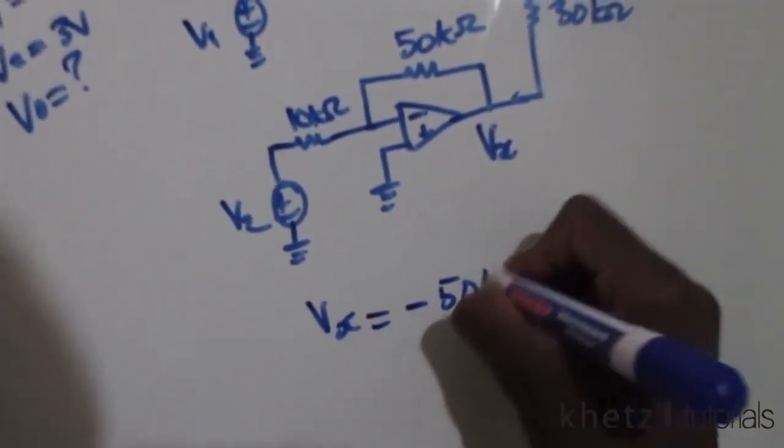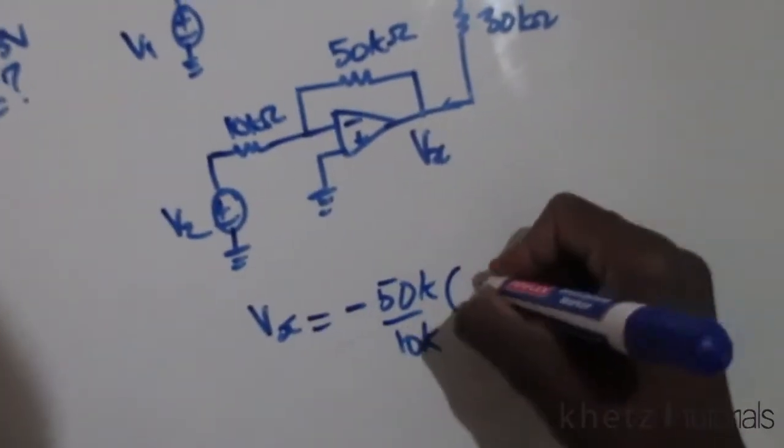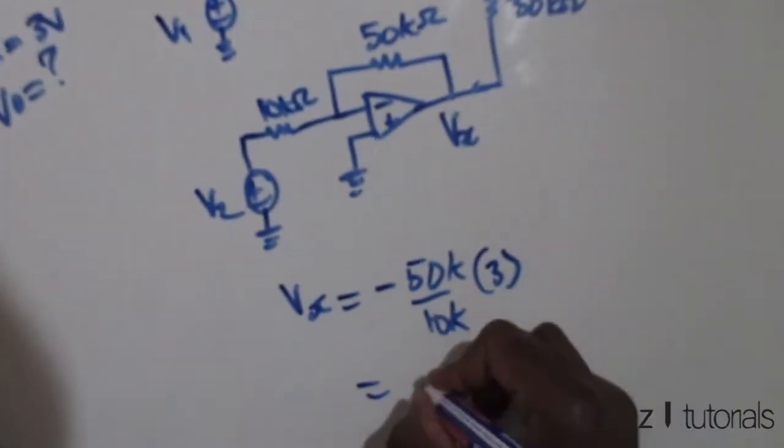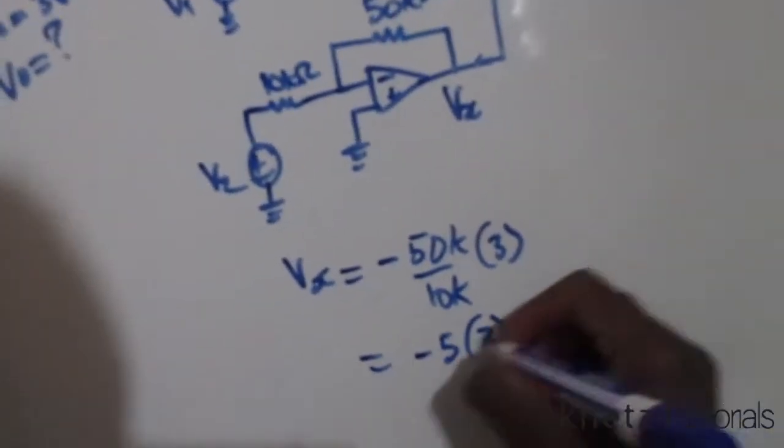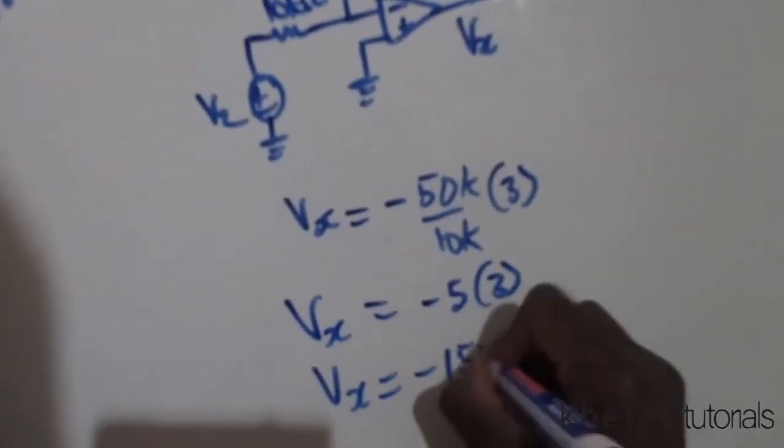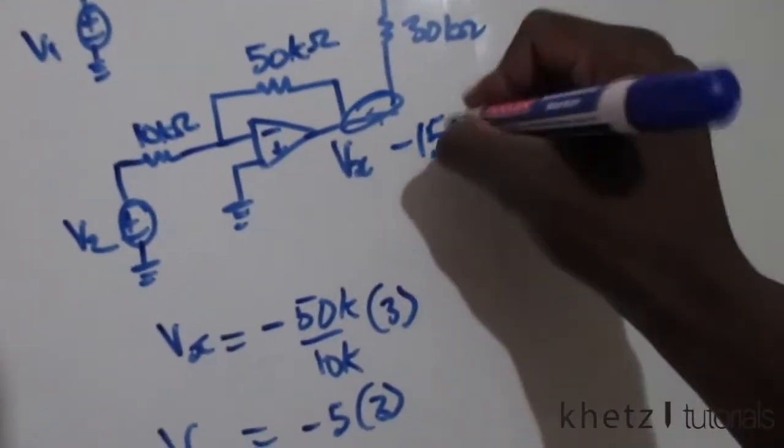negative 50k divided by 10k multiplied by the input of V2 which is 3 and this is going to be negative 5 multiplied by 3. So Vx is equals to negative 15 volts, so we have negative 15 volts at that point.